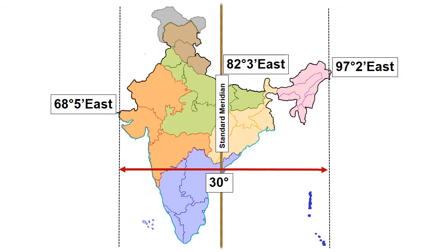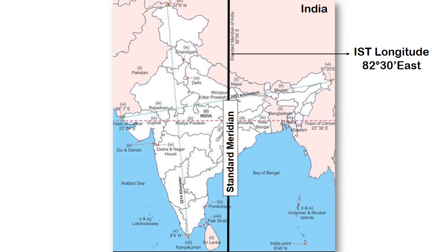India does not follow any daylight saving time. So in order to follow one timing, India has accepted 82 degrees 30 minutes East longitude as the Standard Meridian of India.